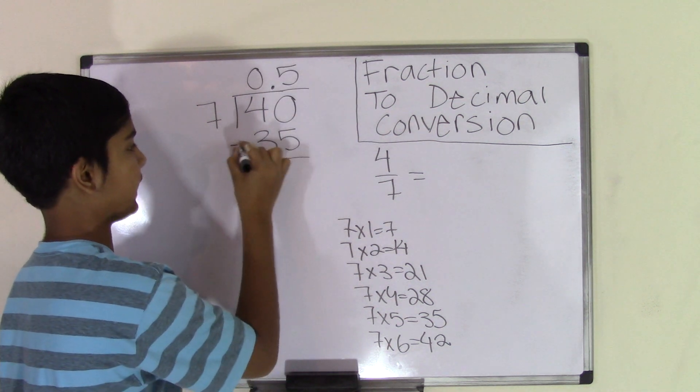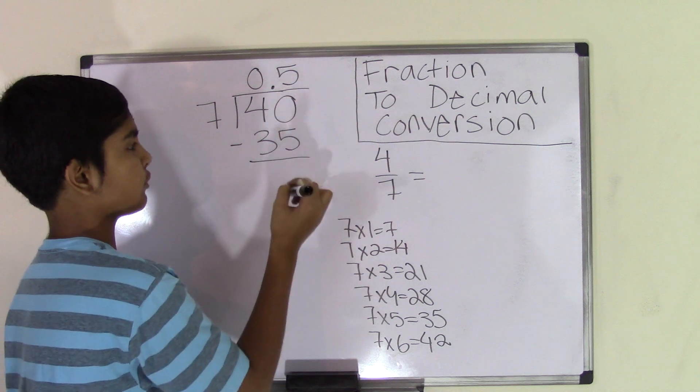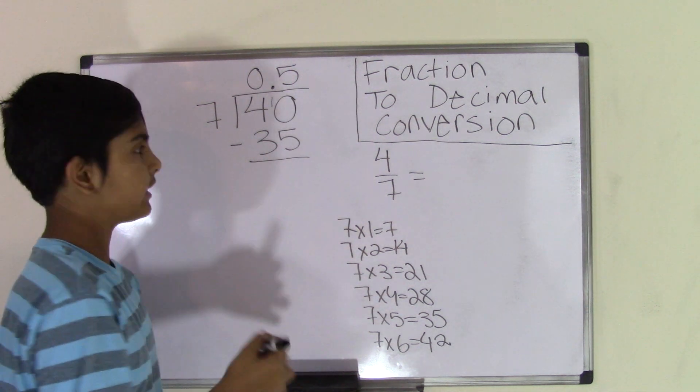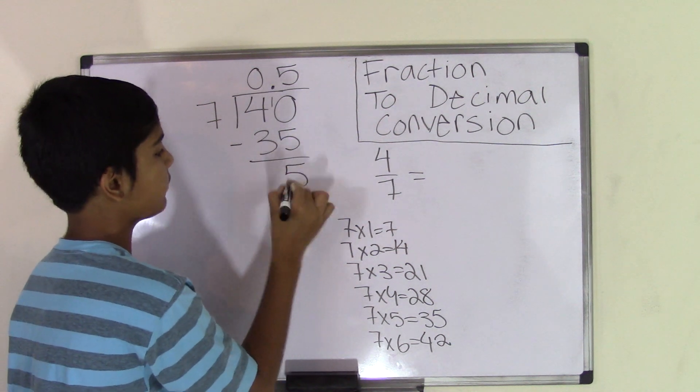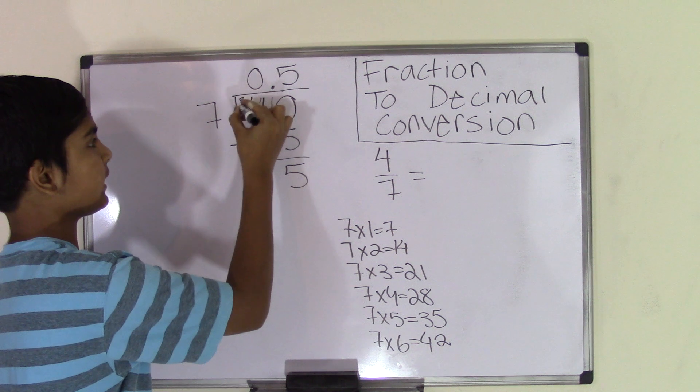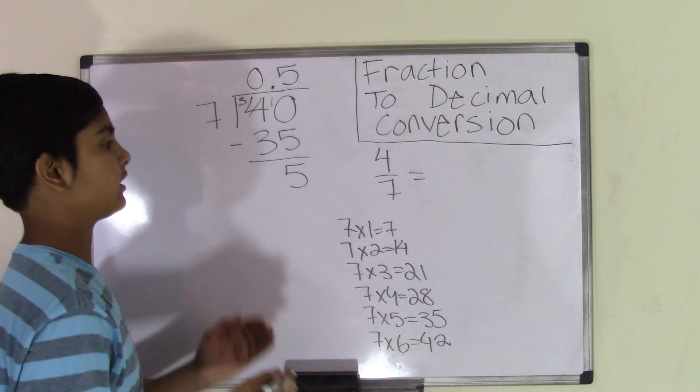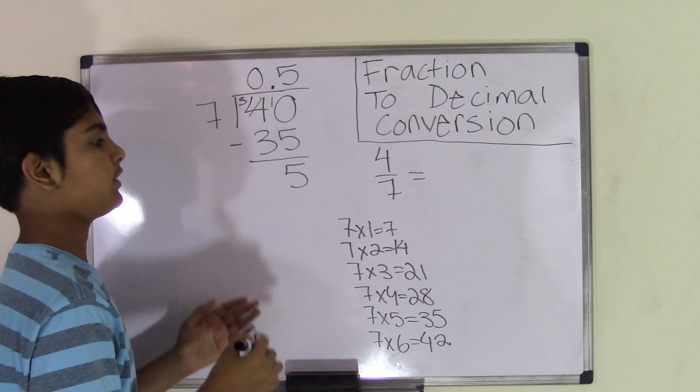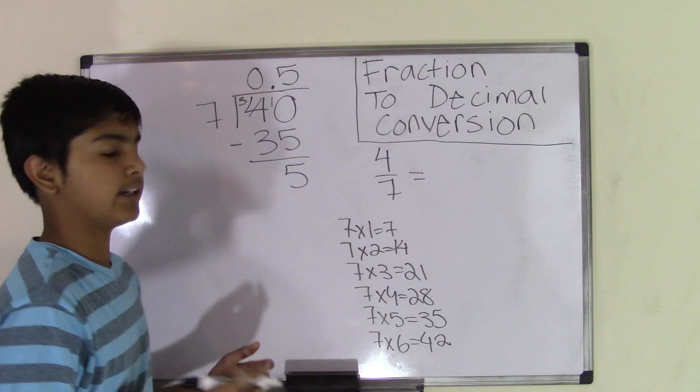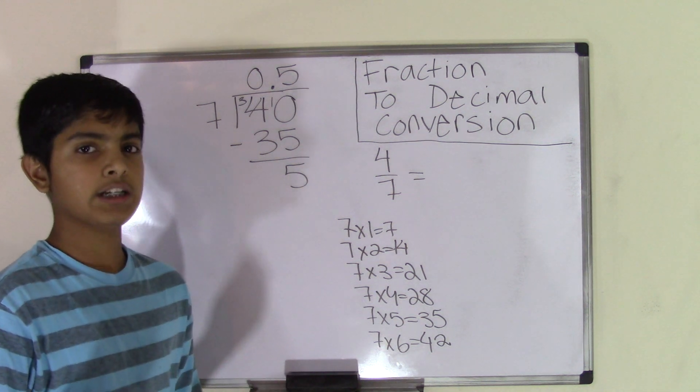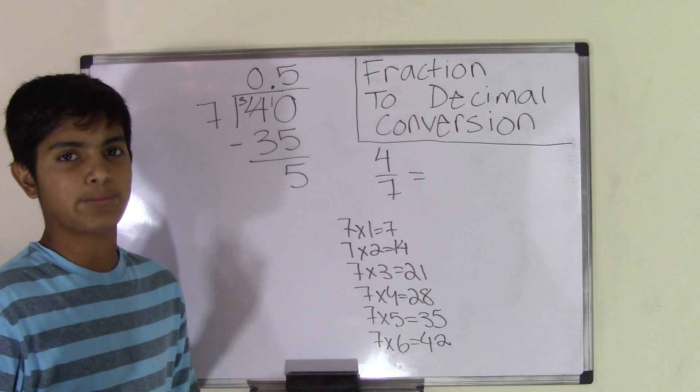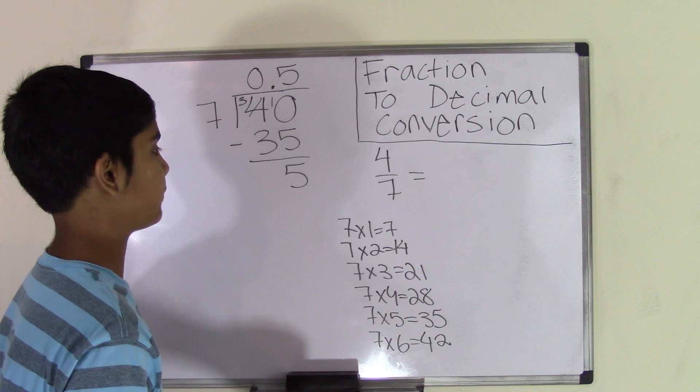Okay, now we subtract. So zero can't go into 5, so we borrow a 1 from that 4 to make that a 10, and 10 minus 5 is 5. And since we borrowed a 1 from the 4, the 4 will become 3, and 3 minus 3 gives us nothing. So we're left with the number 5. Now the number 5, we can't leave it as this, because whenever you're doing decimal numbers, the quotient will have no remainder. So we need to keep on dividing.